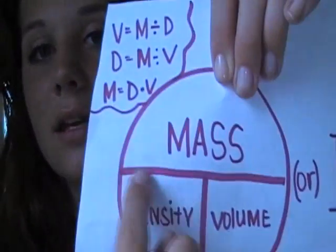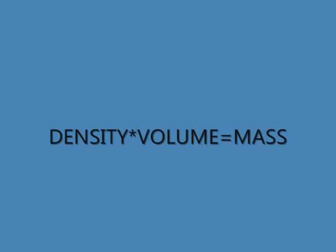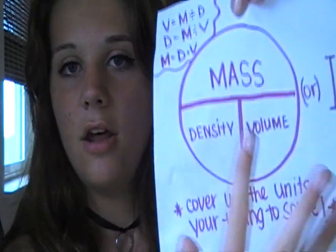You can use the cheat circle, and basically this line here means: if two values are right next to each other, it's multiplication — they're multiplying each other. So to find the mass of something, you would multiply density and volume.